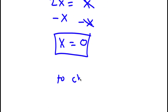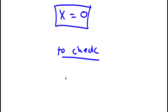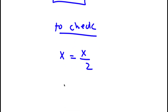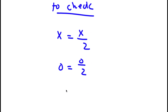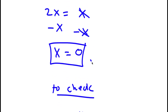Now to check — I have x is equal to x over 2. We know that x equals 0. So I have 0 is equal to 0 over 2. 0 divided by 2 is 0. So I have 0 equals 0, and because this is right, my solution is right.